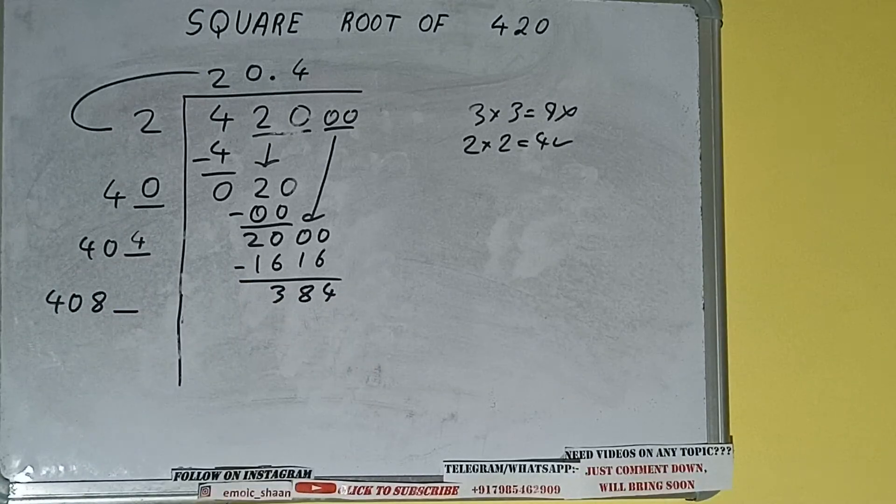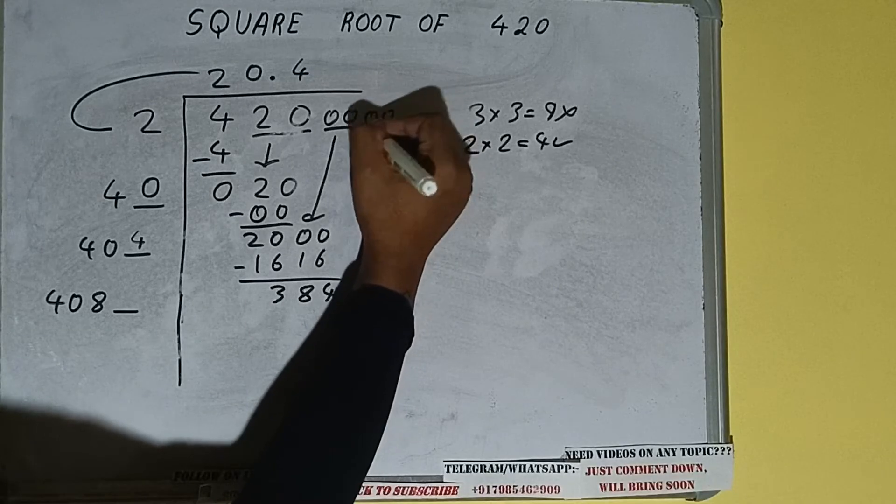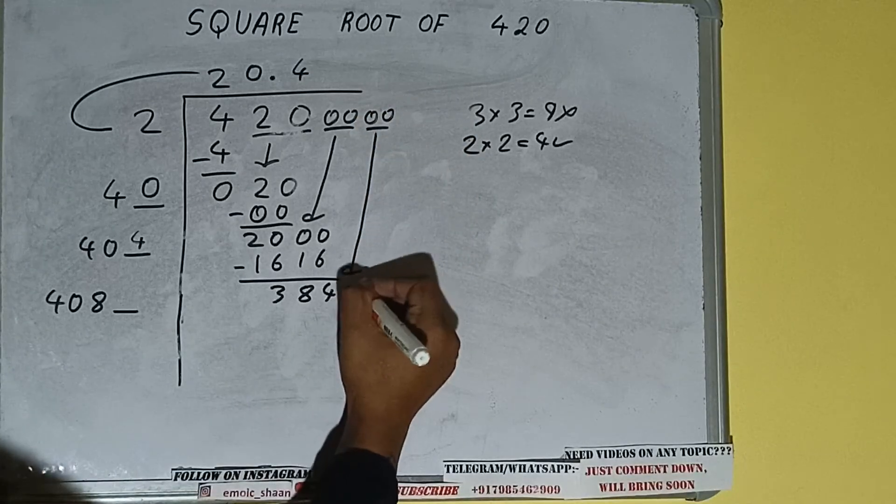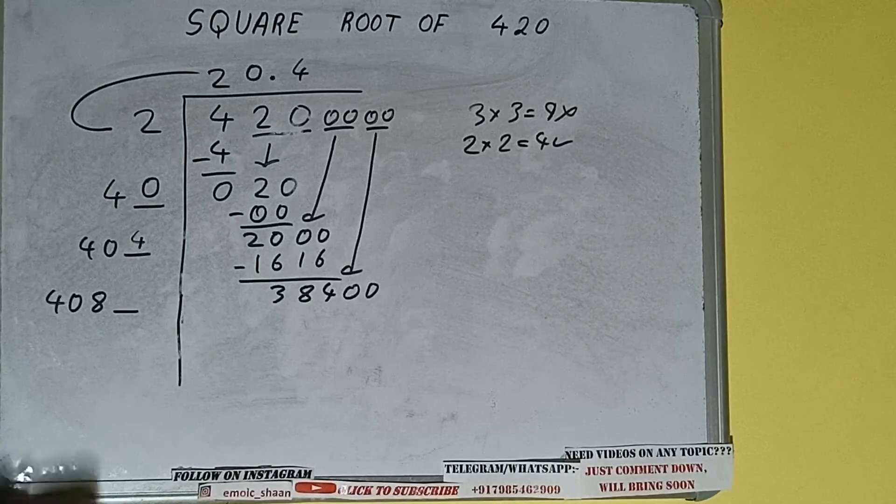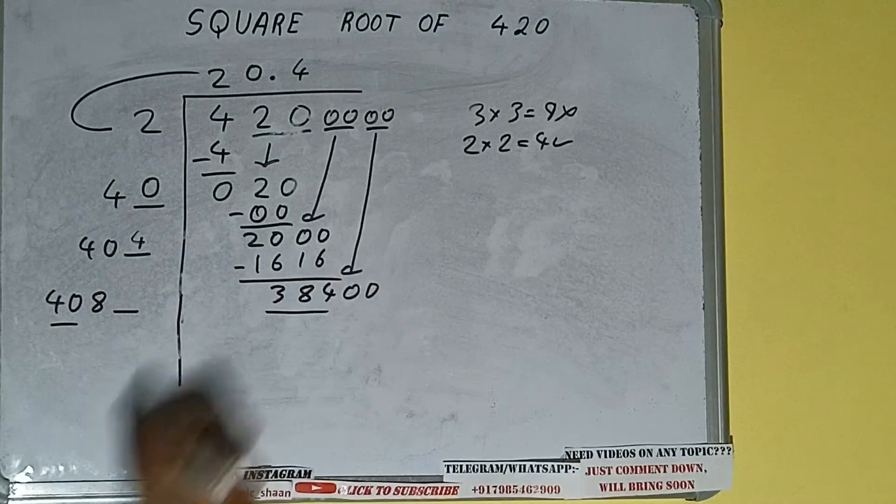And this number we need to make it big, so bring the next pair of zeros down and it will be 38,400. Compare this: 40 and 384.